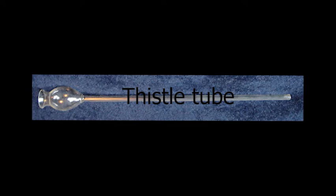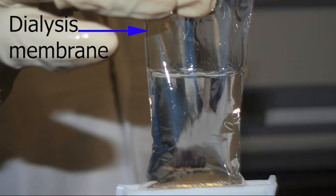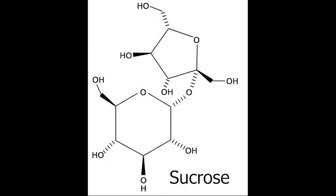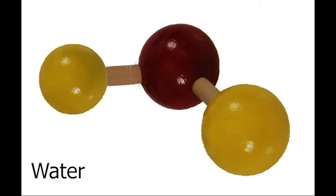In this activity, you will observe the effect of osmotic pressure in a demonstration. A red color sucrose solution was poured into the T-cell tube and dialysis membrane was placed securely over the mouth of the tube with a rubber band. Dialysis membrane is non-living but selectively permeable, like a cell membrane. The T-cell tube with sucrose solution was lowered into a beaker of distilled water. Sucrose molecules are too large to pass through a dialysis membrane. Water molecules are small enough to move across a dialysis membrane.